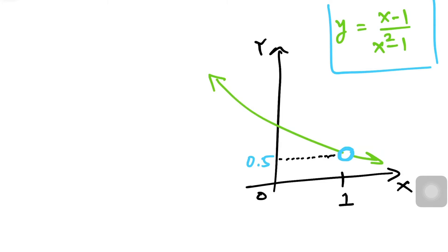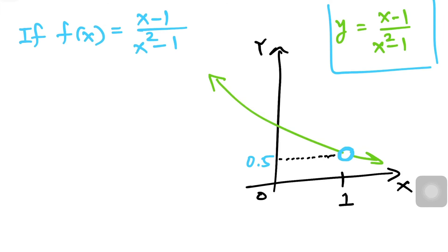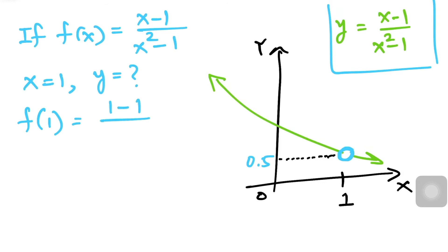Let's say we have y = (x − 1) / (x² − 1). I want to ask the same question, but pay close attention — this part can confuse you. If x = 1, what's the y-value? f(1) = (1 − 1) / (1² − 1) = 0/0, which is undefined.